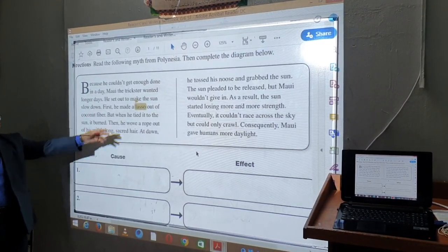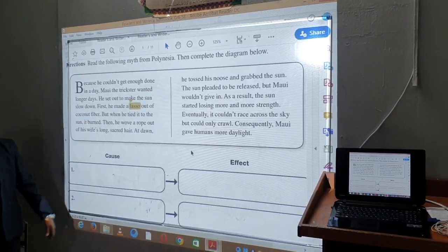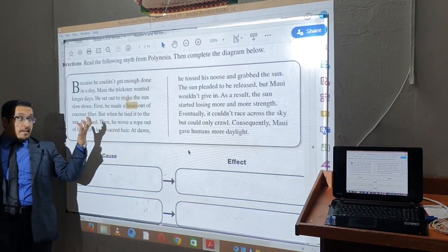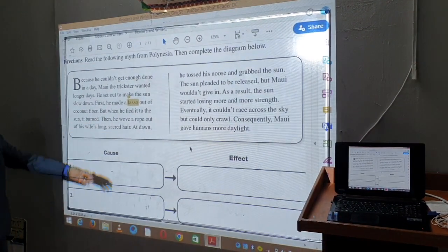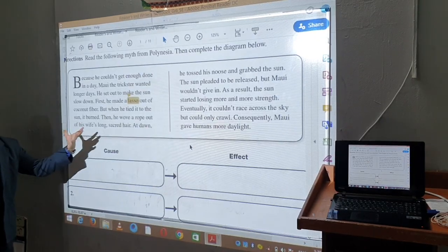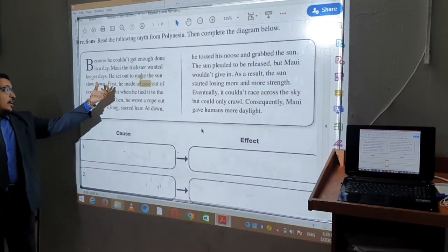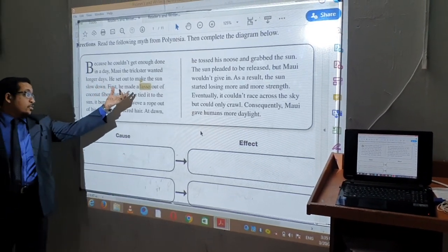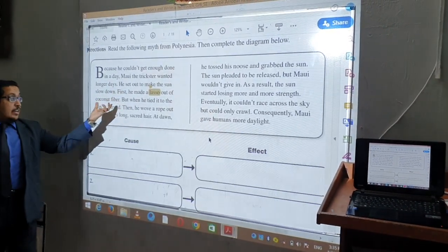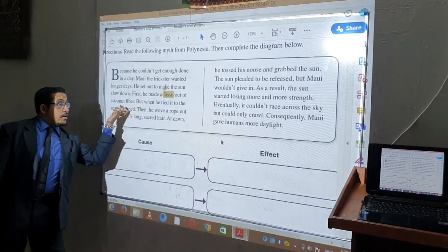So this is the meaning of the word lasso. Let's continue reading. First, he made a lasso out of coconut fiber. So this rope would be very weak, but when he tied it to the sun, what happened? It burned. As a result, it burned.